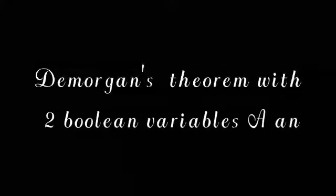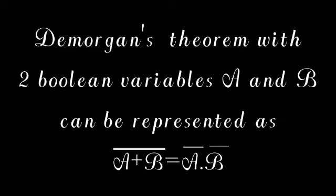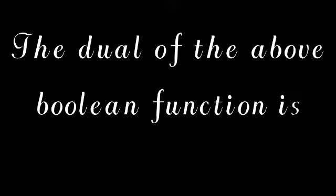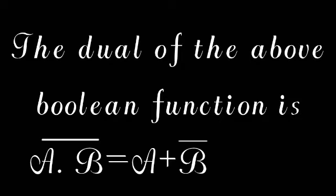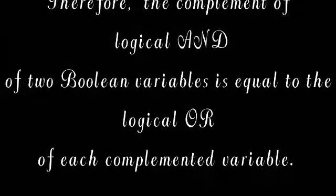De Morgan's theorem with two Boolean variables a and b can be represented as: a plus b, the whole bar, equal to a bar into b bar. The dual of the above Boolean function is a into b, the whole bar, equal to a bar plus b bar. Therefore, the complement of logical AND of two Boolean variables is equal to the logical OR of each complemented variable.